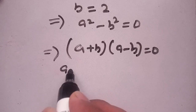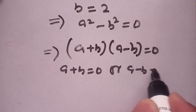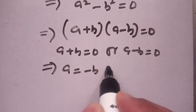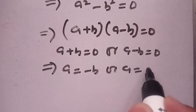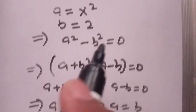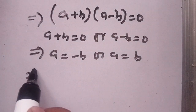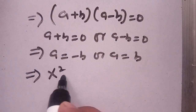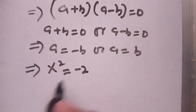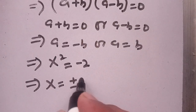Setting this equal to 0 and equating both factors, we get a plus b is equal to 0, or a minus b is equal to 0, which implies a is equal to minus b, or a is equal to b. We have considered a is equal to x squared and b is equal to 2. Back-substituting these values, we get x squared and b is equal to 2.